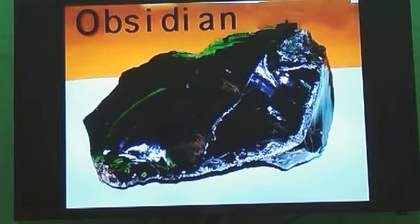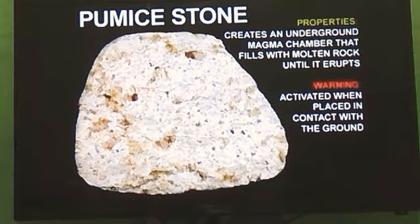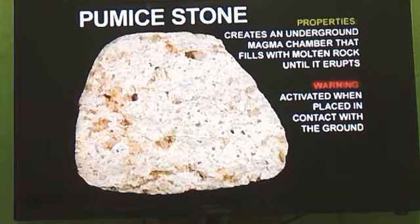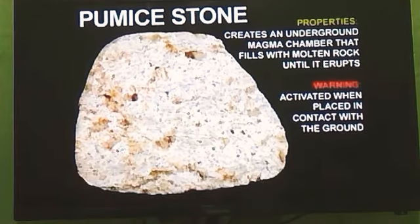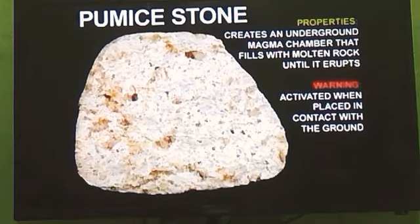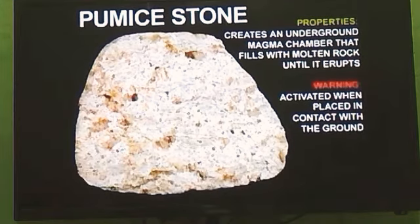Now we come to our next type, Pumice stone. Do you see the small holes present in this rock? These holes are formed when gases trapped inside are released during its formation. When pumice is formed, the gases escape, leaving holes in the rock — just like bread, which also has small holes because gases escape during bread formation. Pumice is formed by quickly cooling lava above the ground. It is used by dentists for polishing teeth, and also as a body scrubber. You can find pumice stone in your bathroom.